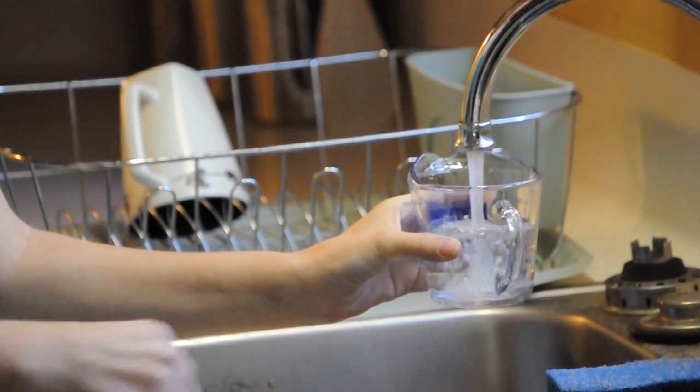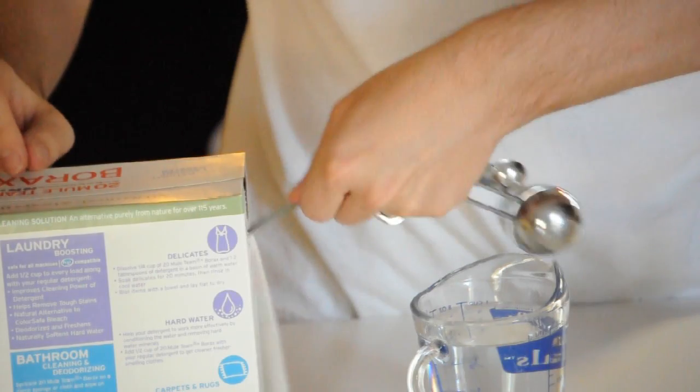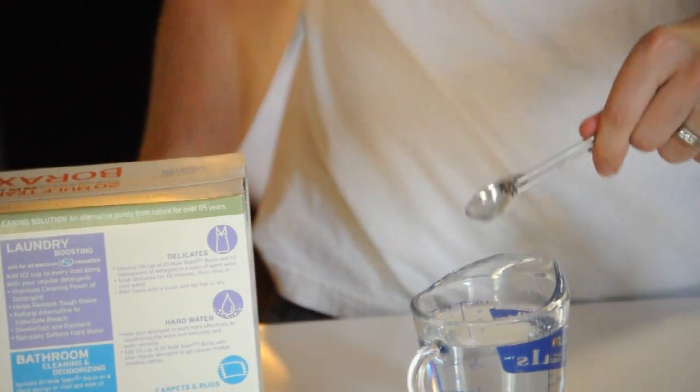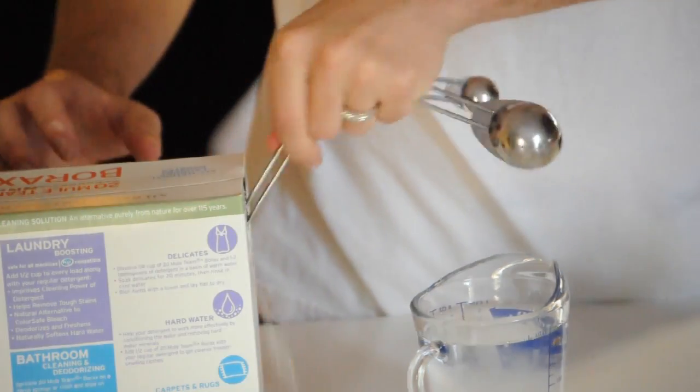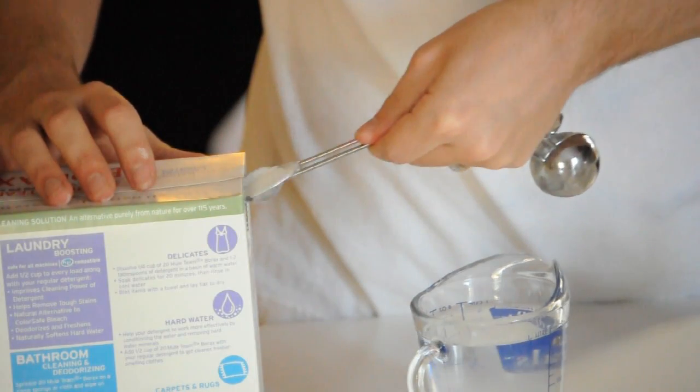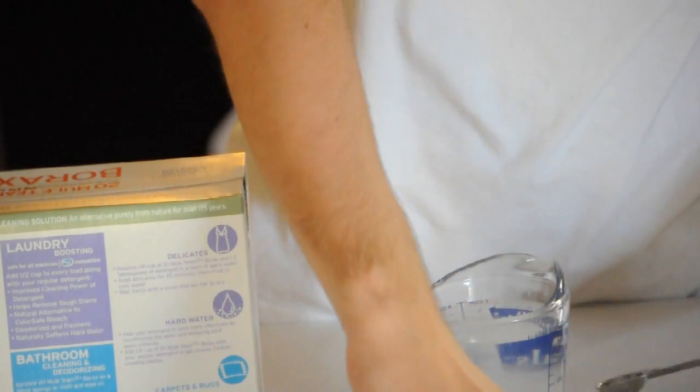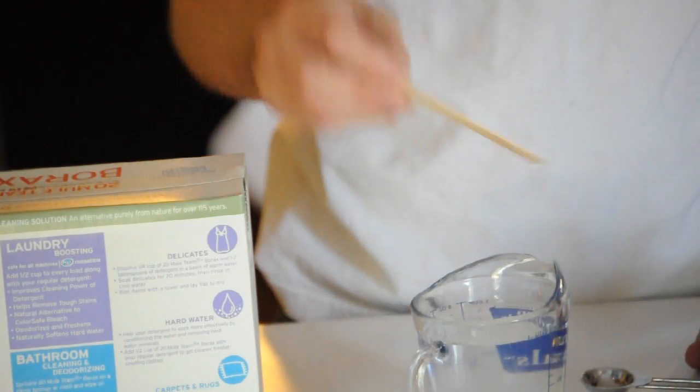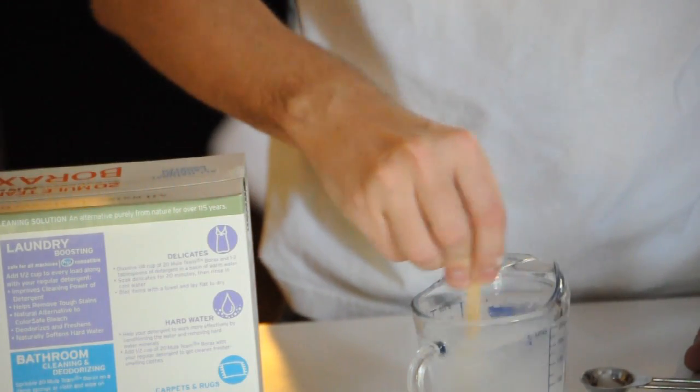We're going to add one cup of water to our measuring cup. From here we're going to take two teaspoons of the borax and dissolve it into the water. Then grab one of your stirring sticks. We're just going to give it a good stir around.